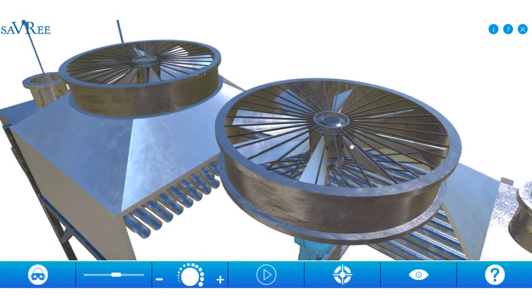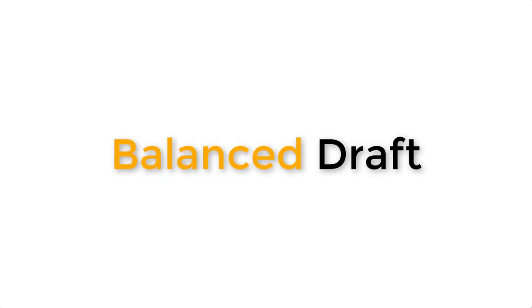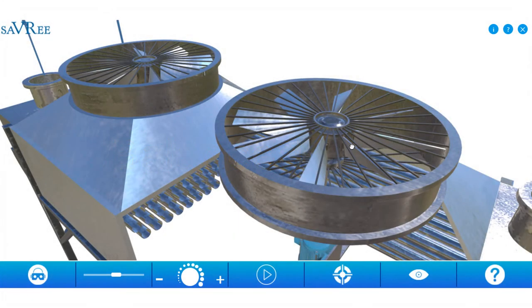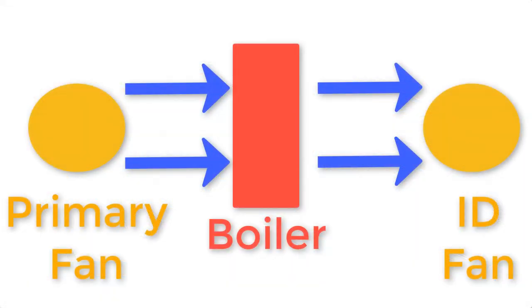That brings us to our final type of draft, and that is balanced draft. Balanced draft simply means you're supplying air into a space — let's imagine a boiler — and you're drawing the same volume of air back out again on the opposite side. A primary fan supplies air to a boiler for combustion. We don't want exhaust gas hanging around inside because the oxygen has been depleted, so we use an ID fan to suck the exhaust gas out. With one fan blowing in and one fan sucking out, we have a balanced draft — sometimes called suction firing.